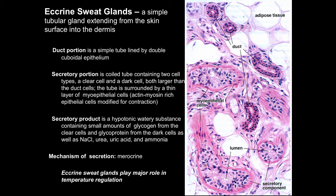An eccrine sweat gland is a simple tubular gland extending from the skin surface into the dermis. The duct portion of the gland is a simple coiled tube lined by a double cuboidal epithelium, or stratified cuboidal epithelium. The secretory portion is a coiled tube consisting of two cell types — a clear cell and a dark cell — not easily visible on histological section but visible at the electron microscopic level. Both of these cells are larger than the duct cells. The tube itself is surrounded by a thin layer of myoepithelial cells, which are rich in actin and myosin. These modified epithelial cells contract to help force the secretory product out of the sweat gland. The secretory product is a hypotonic watery substance containing small amounts of glycogen from the clear cells and glycoprotein from the dark cells.